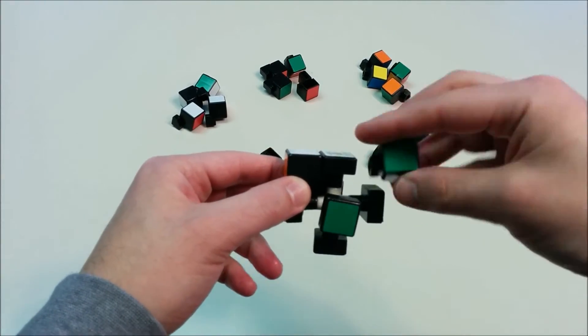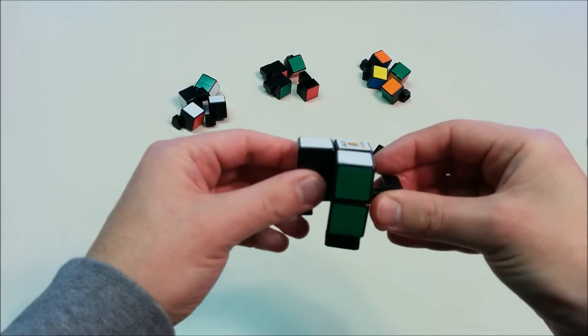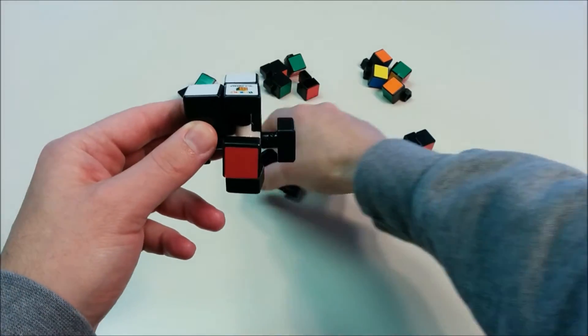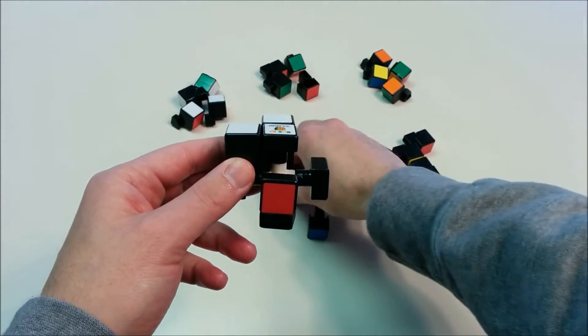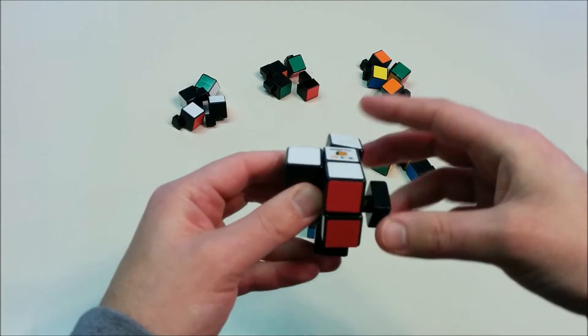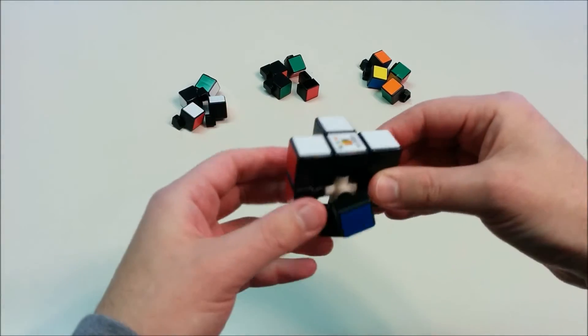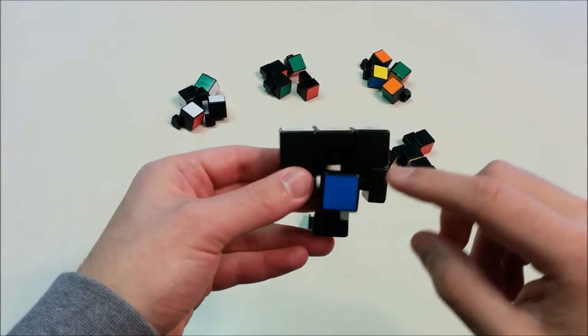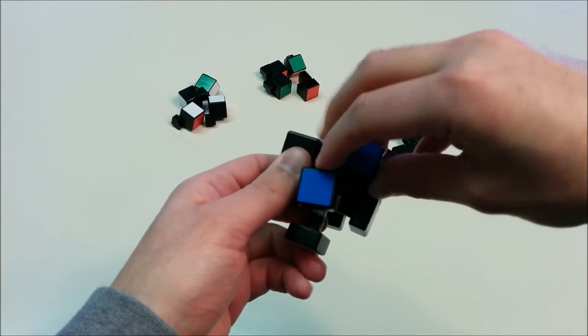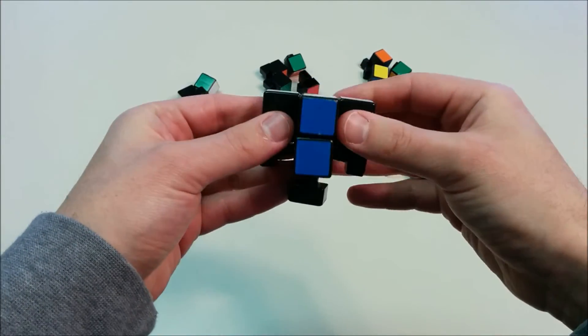Similarly, the next side has green and white, and we're going to keep going around the rest of the layer. So we put the red and white edge piece in position, and finally we put the blue and white edge piece in position. And at this time we've solved the white cross.